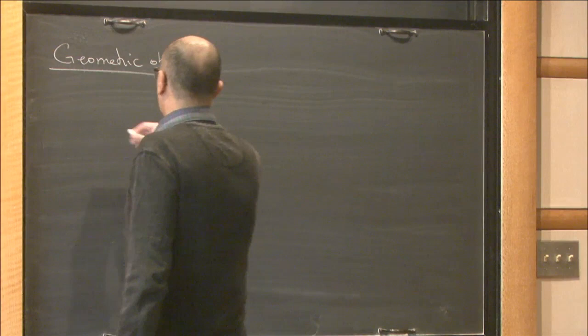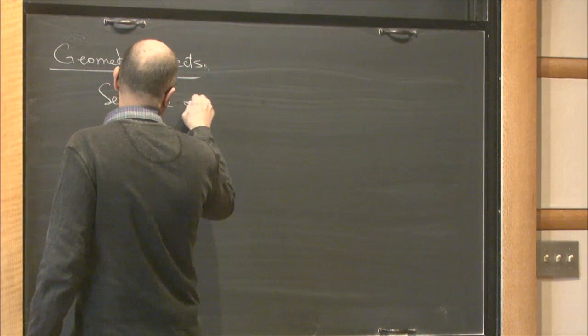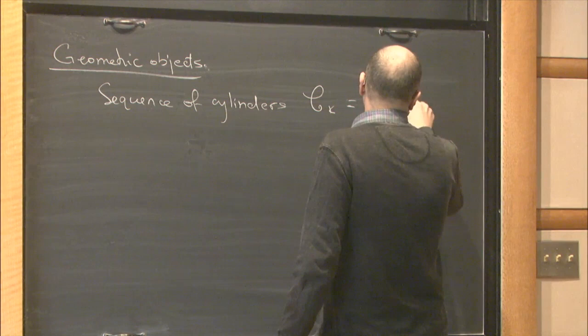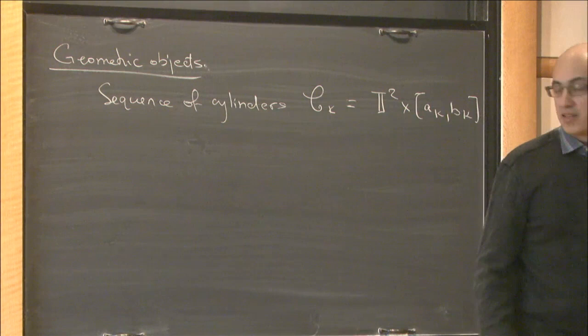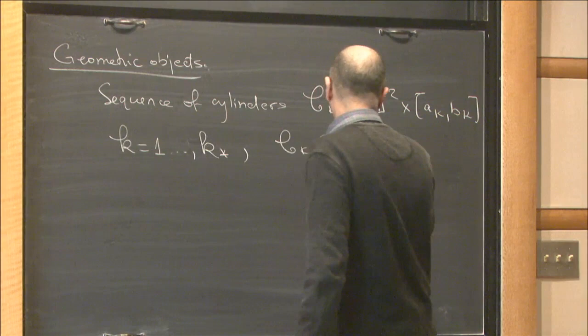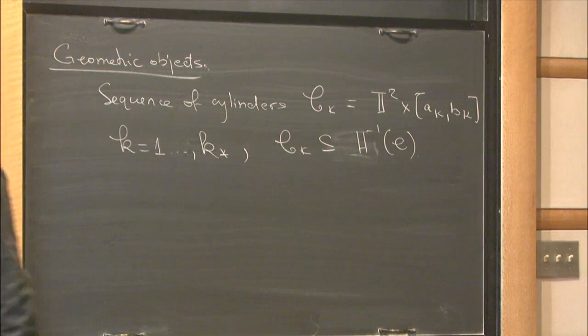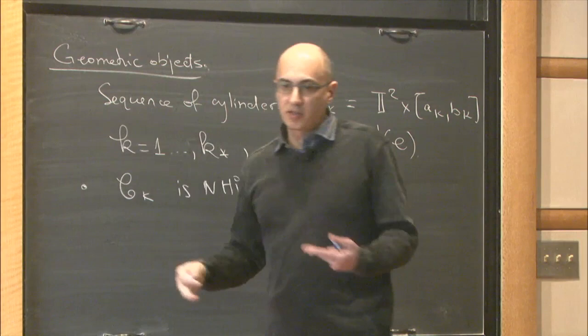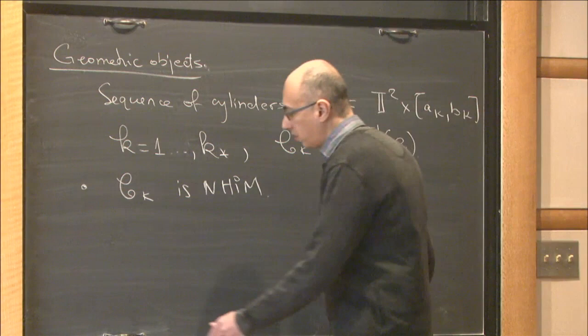The construction gives you a sequence of cylinders — three-dimensional cylinders in the energy manifold. Each cylinder is normally hyperbolic, so they are normally hyperbolic invariant manifolds with boundary. They have stable and unstable manifolds.